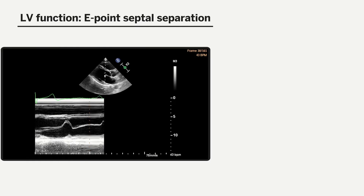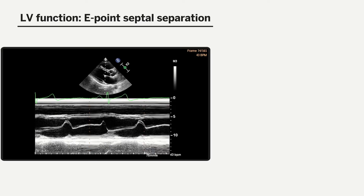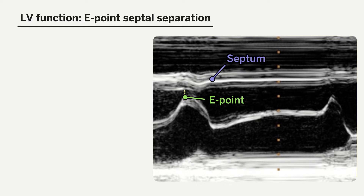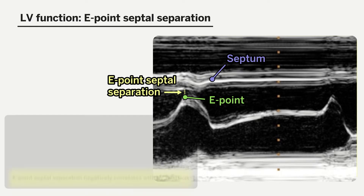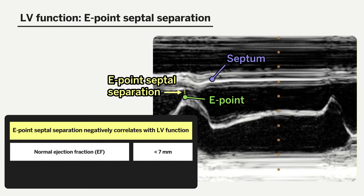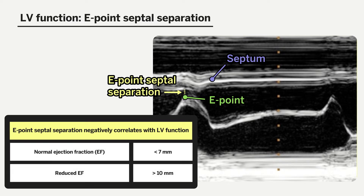Quantitatively, we can assess left ventricular function using a method known as E-point septal separation. This measurement is obtained by placing the M-mode tracer over the distal tip of the anterior mitral valve leaflet. The mitral valve waveform on M-mode contains two peaks in sinus rhythm: the E-point and the A-point. In patients with good left ventricular function, the E-point — which corresponds to maximal mitral valve opening — should hit or come very close to the intraventricular septum. The distance between the E-point and the septum is negatively correlated with LV function: less than 7 mm correlates to normal ejection fraction, while greater than 10 mm corresponds to decreased cardiac function.